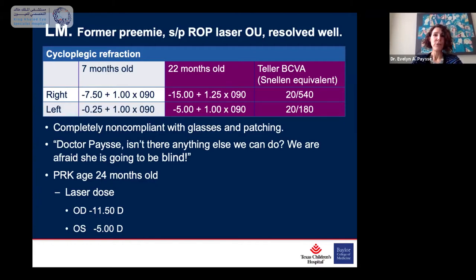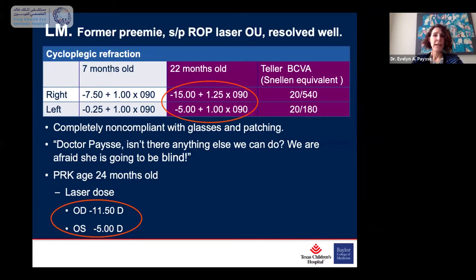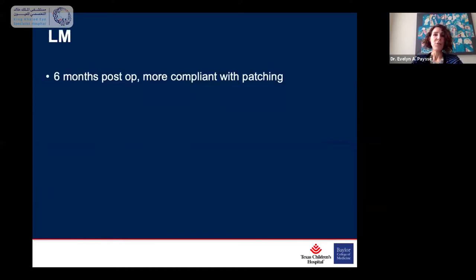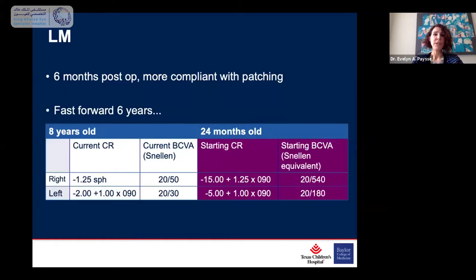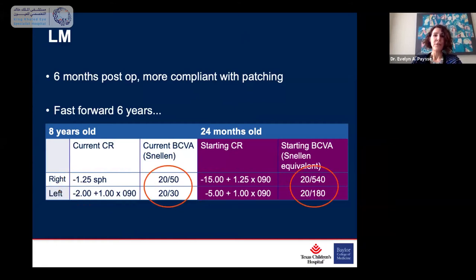We didn't fully treat the minus 15 because I limit my treatment to what the FDA has approved for my laser, the Visx Star S4. Six months post-op, she's now more compliant with patching. Fast forward six years — she's now eight years old. Her current refractive error is really quite excellent. She actually got more response to the laser than expected in that right eye. The left eye is now a little more myopic than the right. Her current vision is 20-50 in the right eye and 20-30 in the left. A really remarkable and pretty awesome success story.